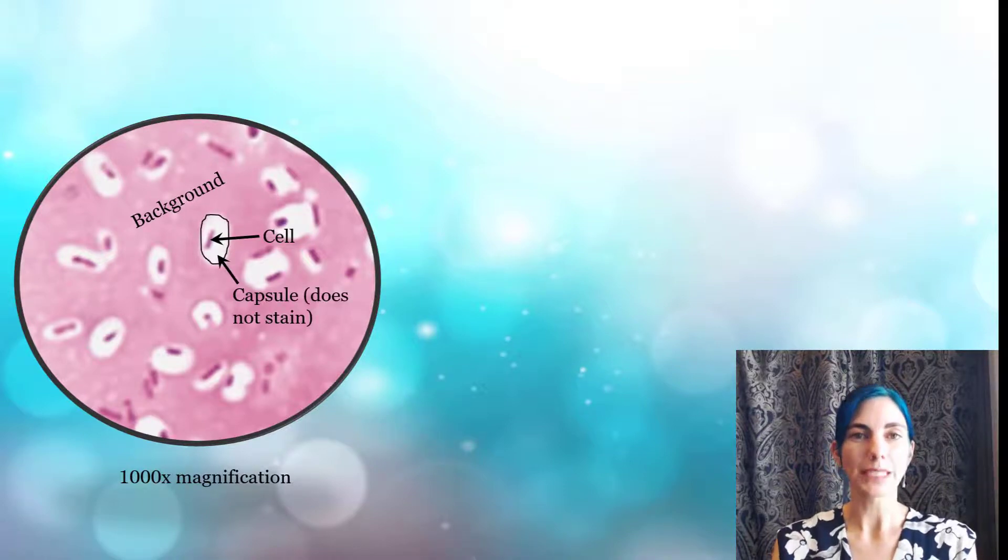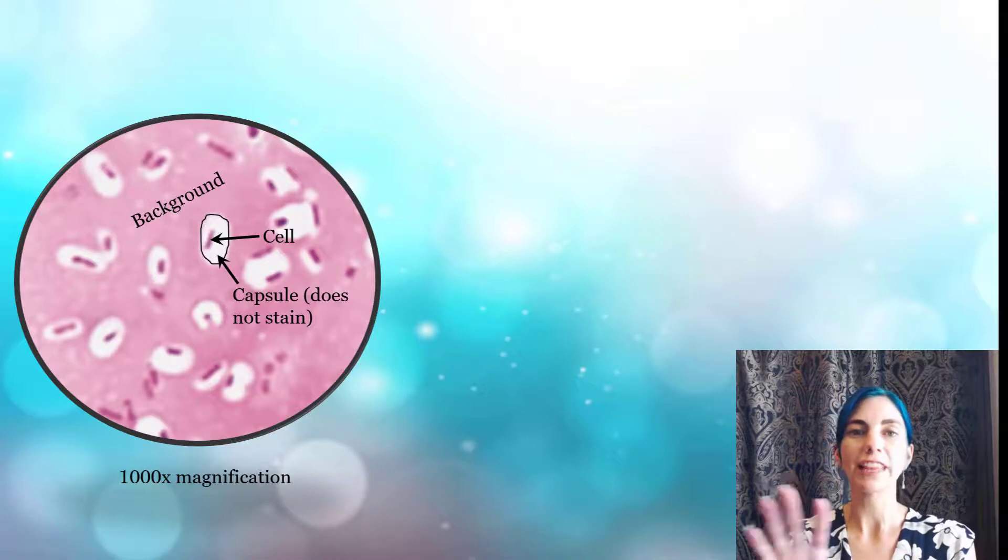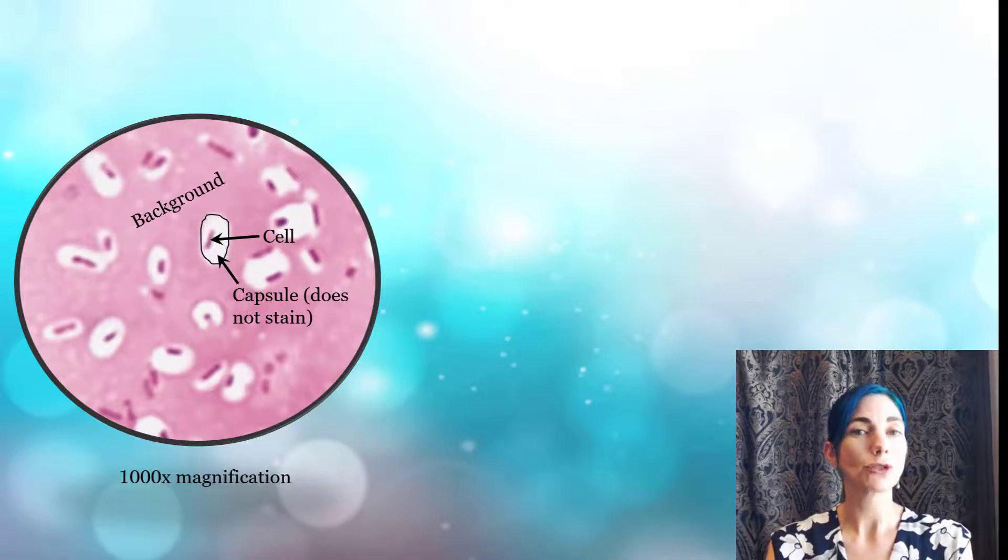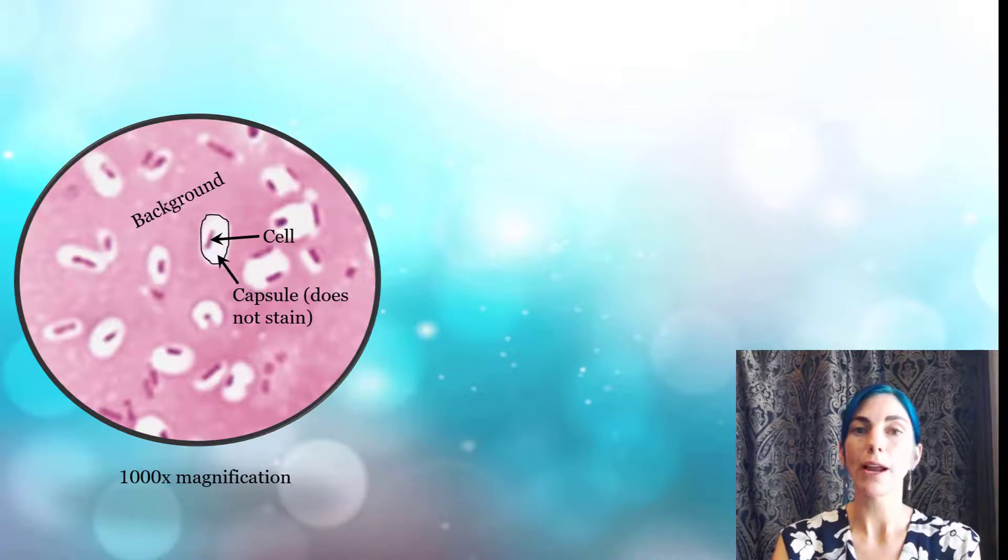So capsule stains are sometimes referred to as negative stains. A negative stain is where you stain everything else but what you're looking for. Because the capsules do not absorb the dyes everything else is stained and what you're really interested in looking at in this case the capsule shows up as a white halo. It's the only thing on here that is not stained.